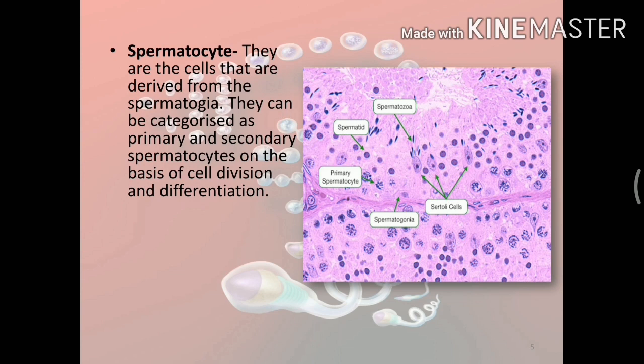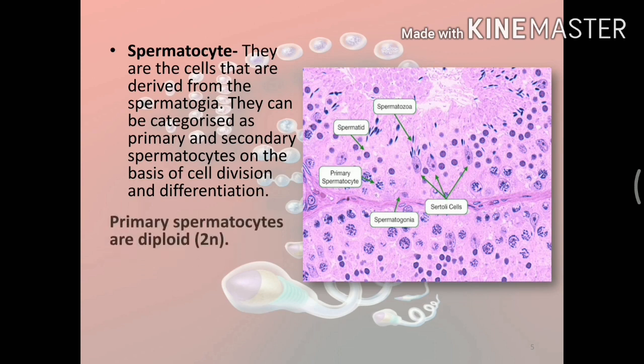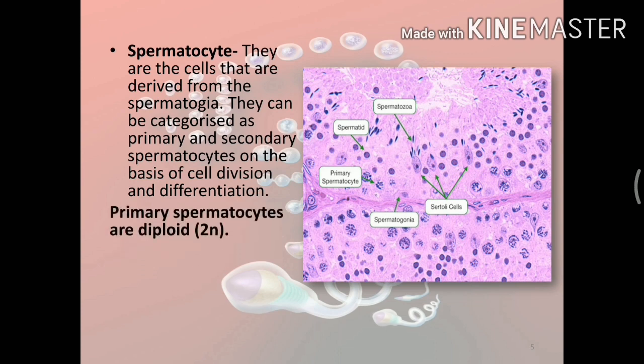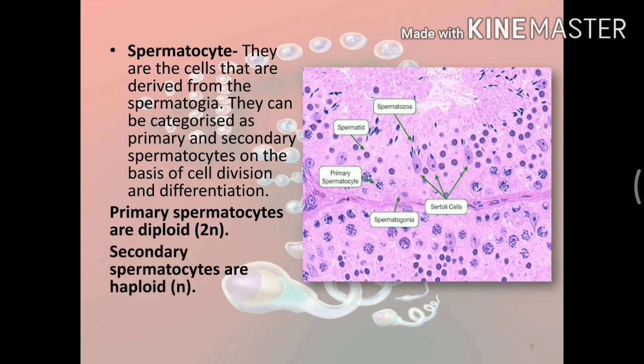Next is the spermatocyte — these are cells derived from spermatogonia, categorized as primary and secondary spermatocytes on the basis of cell division and differentiation. Primary spermatocytes are diploid, as seen in the section, whereas secondary spermatocytes are haploid but cannot be seen in the section because they very quickly enter another cell division phase — meiosis 2 — in order to transform into a spermatid.